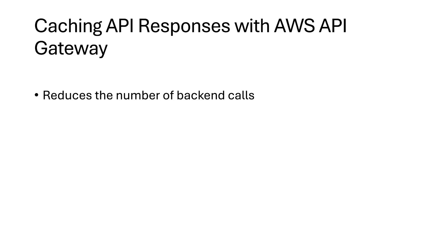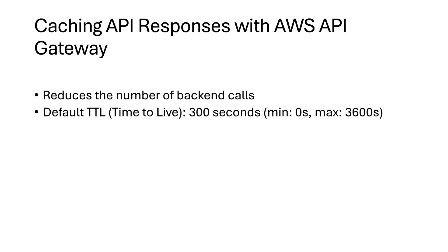Here are some key features you need to know about API Gateway's caching. The first one is the default TTL — time to live — for cached responses, which is 300 seconds. You can configure this from as low as 0 to a maximum value of 3600 seconds. The second point is that caches are defined per stage, meaning you can have different cache settings for different environments such as development, testing, and production.